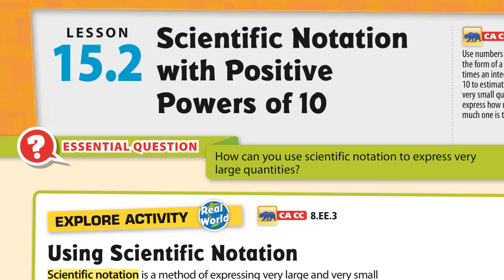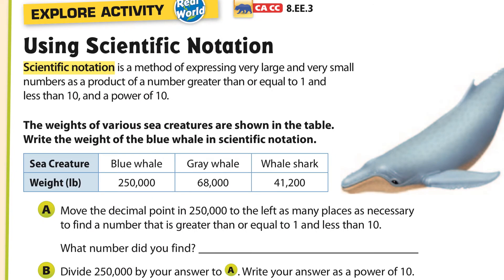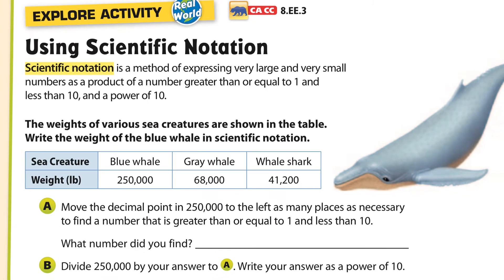Hi and welcome to lesson 15.2. We're talking about scientific notation with positive powers of 10. We're trying to use scientific notation to express very large quantities. Scientific notation is a method of expressing very large and very small numbers as a product of a number greater than or equal to one and less than 10, and a power of 10.